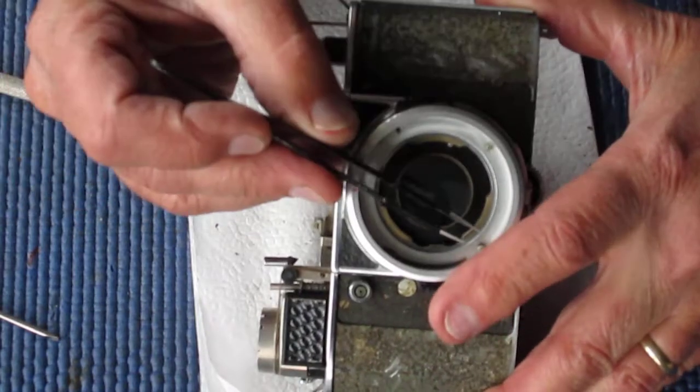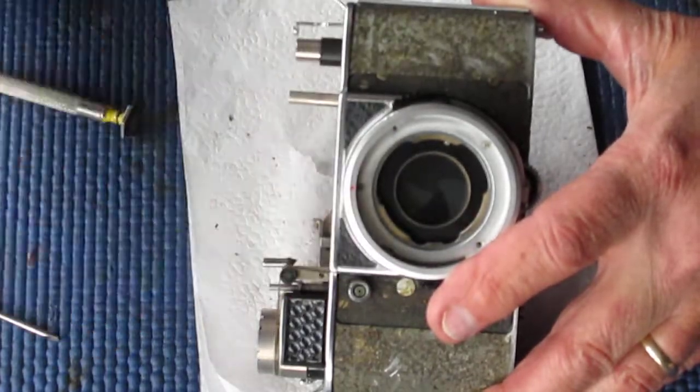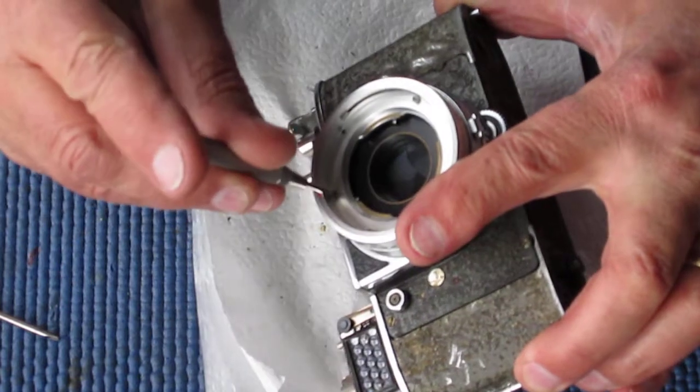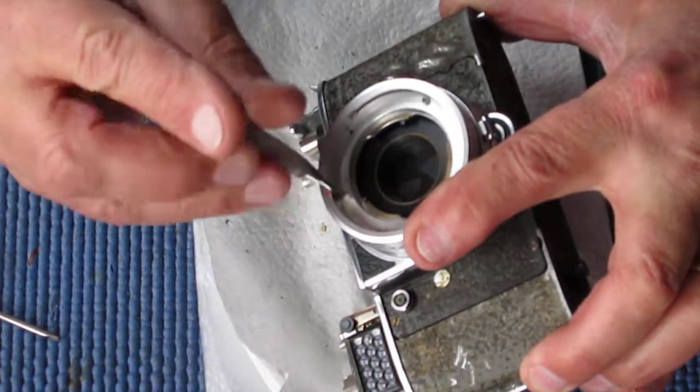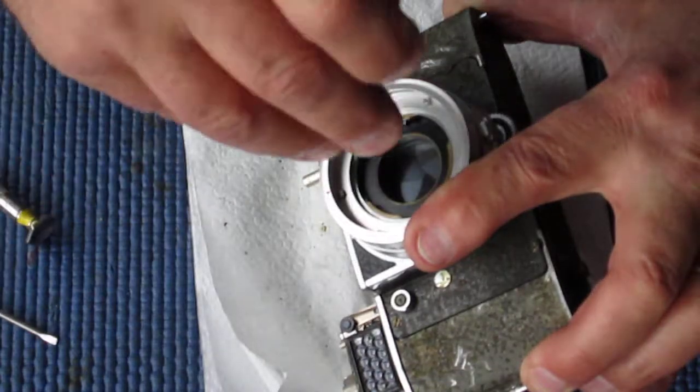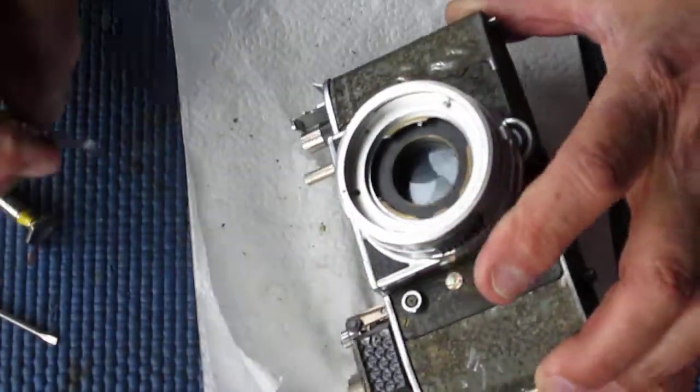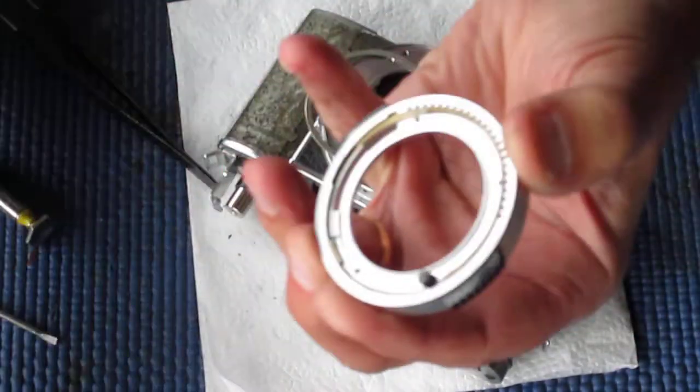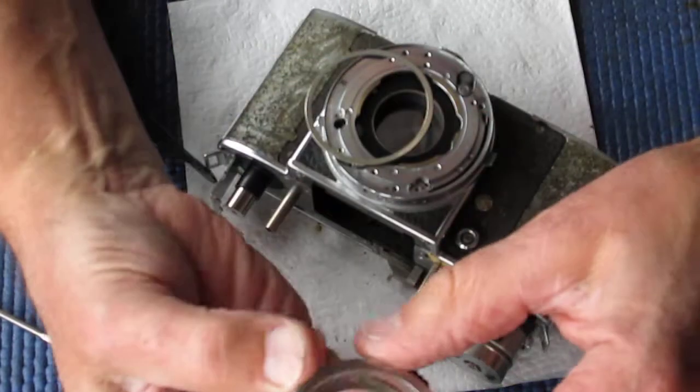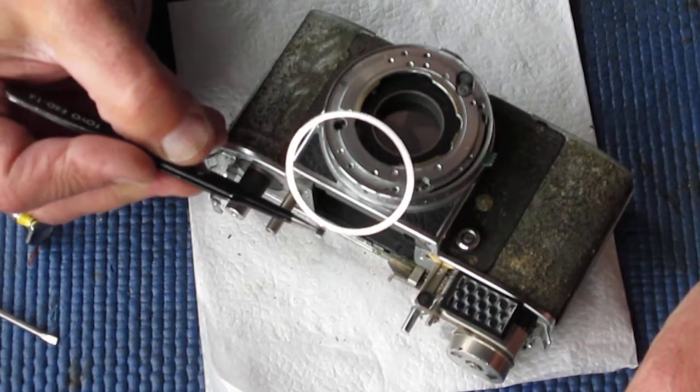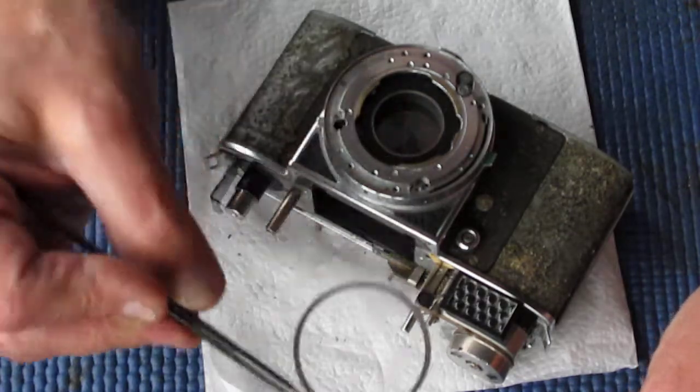One screw, this bottom one, is a long screw. The others are both short. Lift off the front rings together. That's the ring that opens the diaphragm on your lenses.